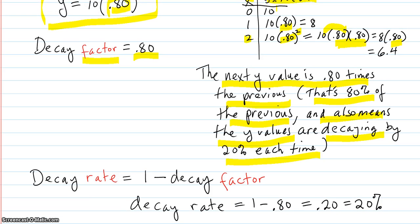So that gives us this nice little formula here. Decay rate is 1 minus the decay factor. So for example, decay rate for this would be 1 minus the point 80 is the point 20, which is 20%.